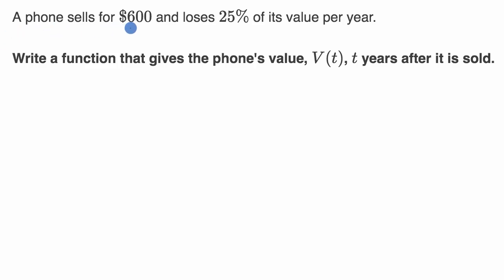We are told a phone sells for $600 and loses 25% of its value per year. Write a function that gives the phone's value, V of T, so value is a function of time, T years after it is sold.